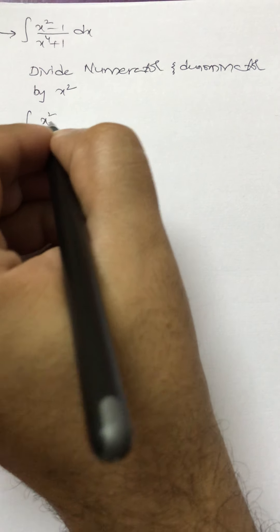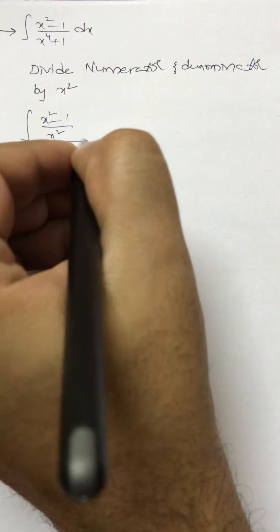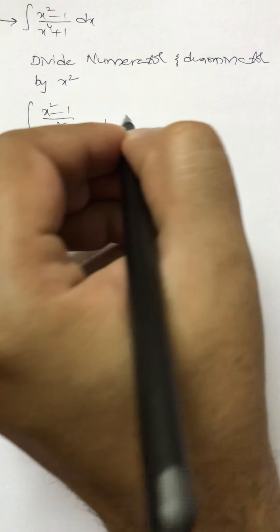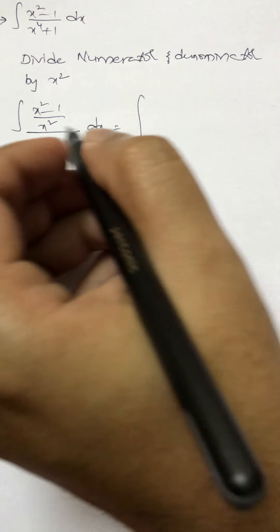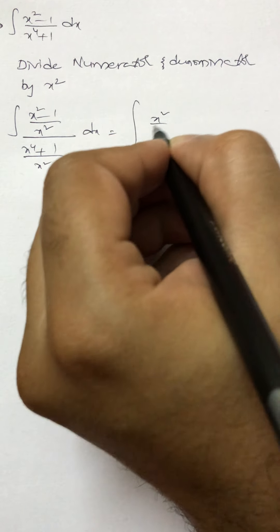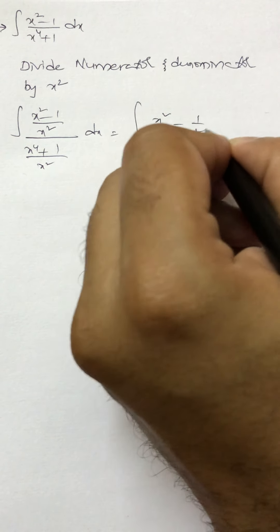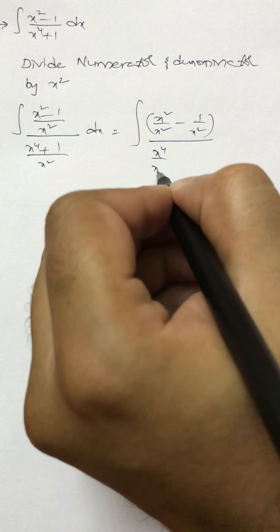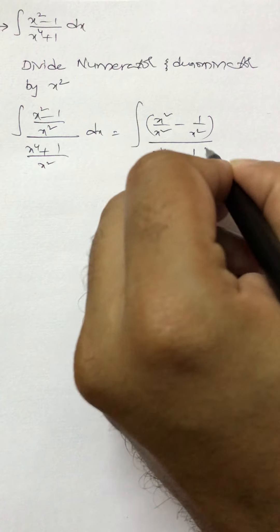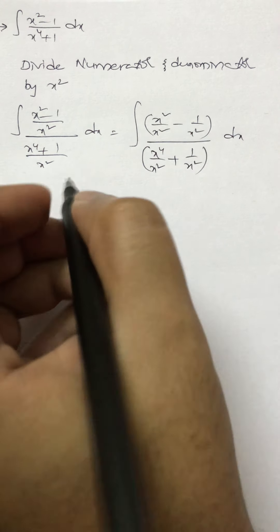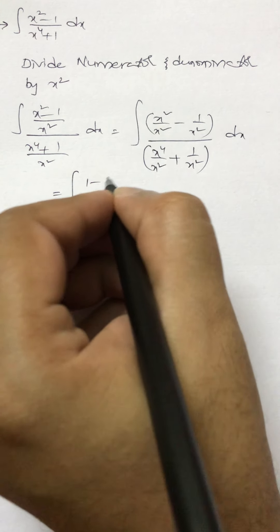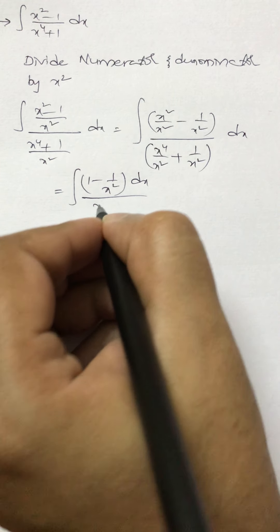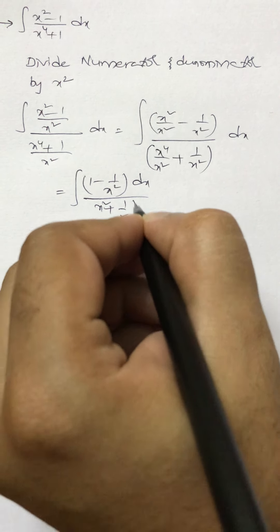So we get integral (x² - 1)/x² divided by (x⁴ + 1)/x² dx. Splitting the denominator: x⁴/x² + 1/x² gives us (1 - 1/x²) dx over (x² + 1/x²).